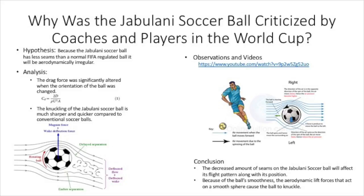However, a Jabulani soccer ball is composed of 8 spherically molded panels. Each of these panels are manufactured with a textured surface in order to improve its aerodynamics.